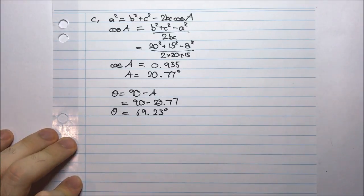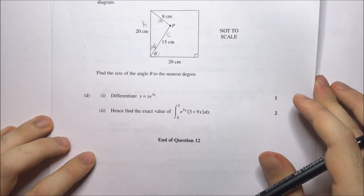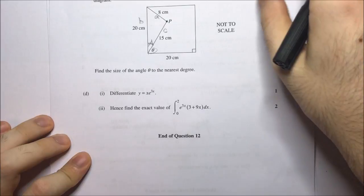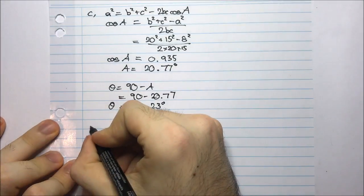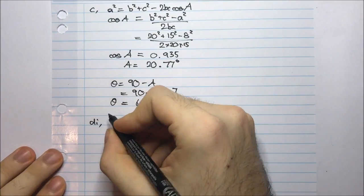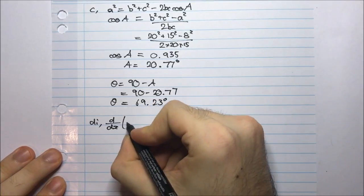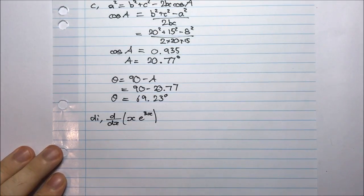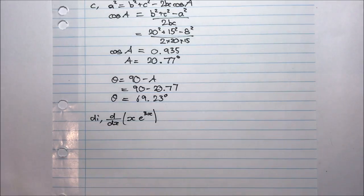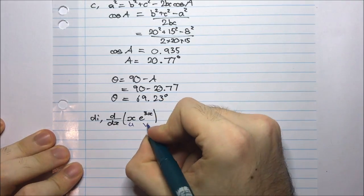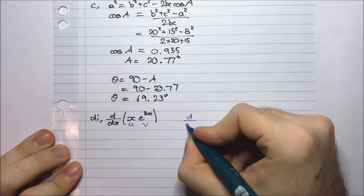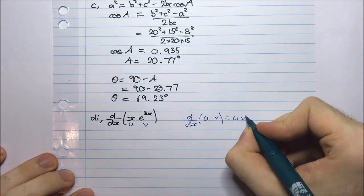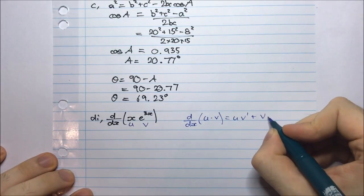That's the angle theta, and that's the end of part C. Not too difficult. Part D, part i: differentiate y equals x e to the power 3x. I'm going to use the product rule because I have a product of functions. Let u equals x and v equals e to the 3x.